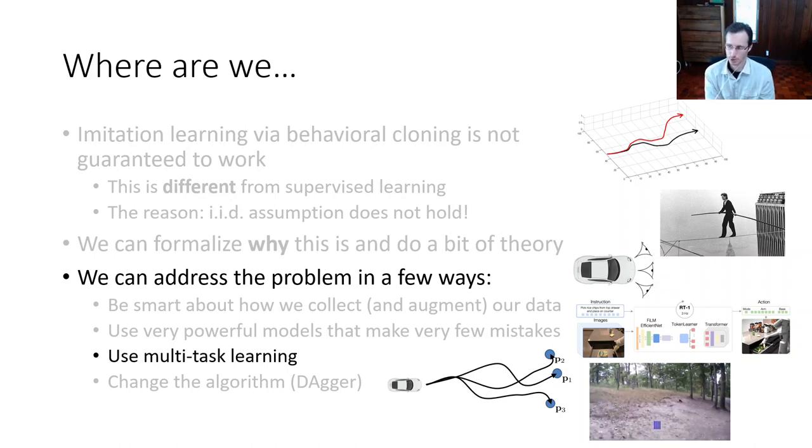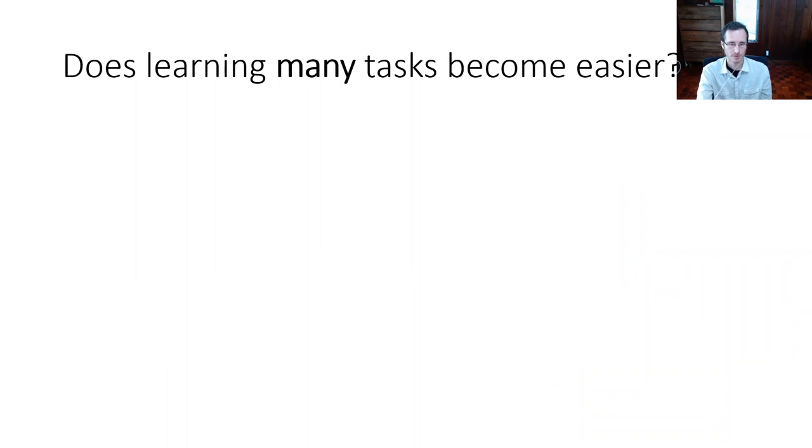Alright. In part four of the lecture, I'll talk about a few algorithmic approaches that can also make behavioral cloning work pretty well. The first one I'll discuss is to use multitask learning. So this might seem a little paradoxical at first, but it turns out that sometimes learning many tasks at the same time can actually make imitation learning easier.